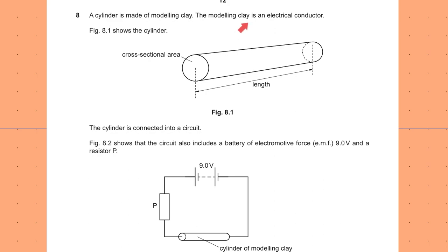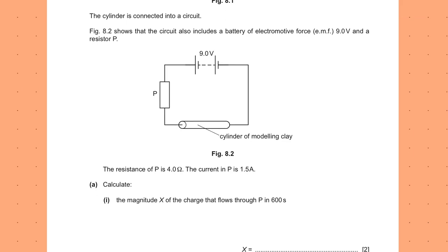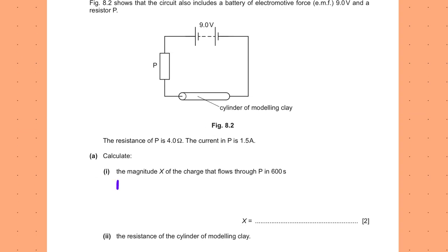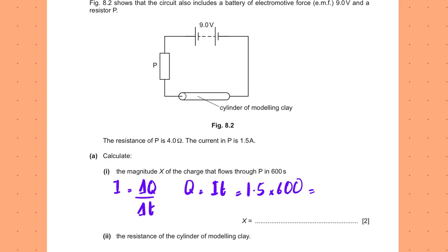A cylinder made of modelling clay (an electrical conductor) is connected into a circuit with a battery of EMF 9 V and a resistor P. Calculate the magnitude X of the charge that flows through P in 600 seconds. Current is the rate of flow of charge. With 1.5 A for 600 s, Q = 1.5 × 600 = 900 coulombs.